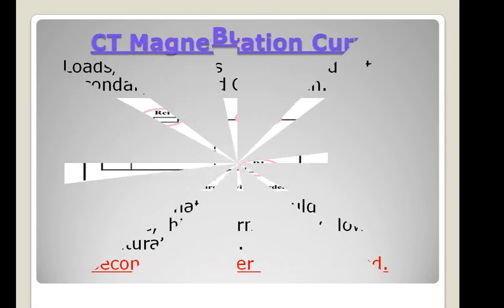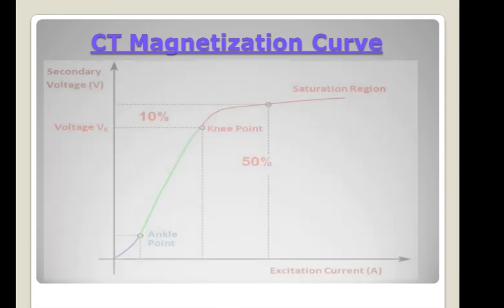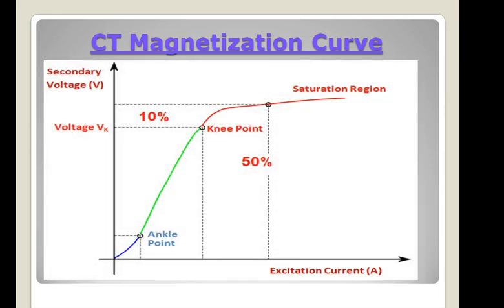Now coming to the CT magnetization curve. The magnetization curve of a CT can be subdivided into four main regions: number one, origin to ankle point; number two, ankle point to knee point; number three, knee region; and number four, saturation region. The knee point is defined as the point where a 10% increase in applied voltage will cause a 50% increase in excitation current. Above the knee point, the CT will maloperate and will tend to saturate.